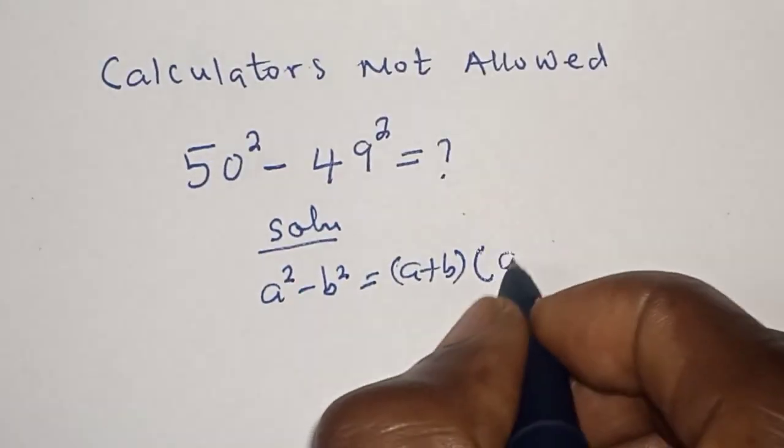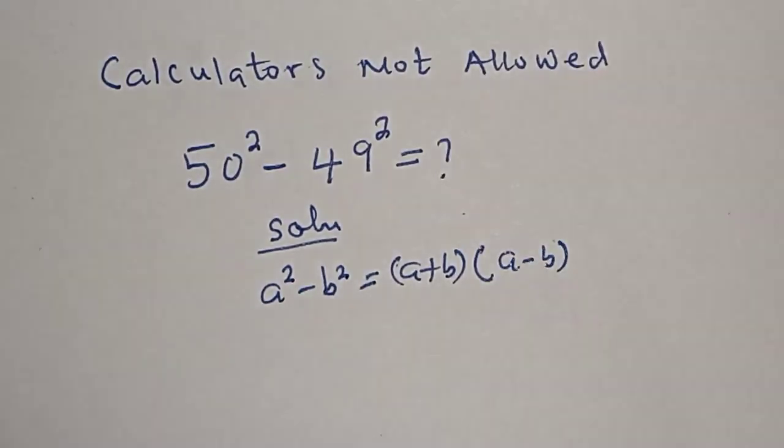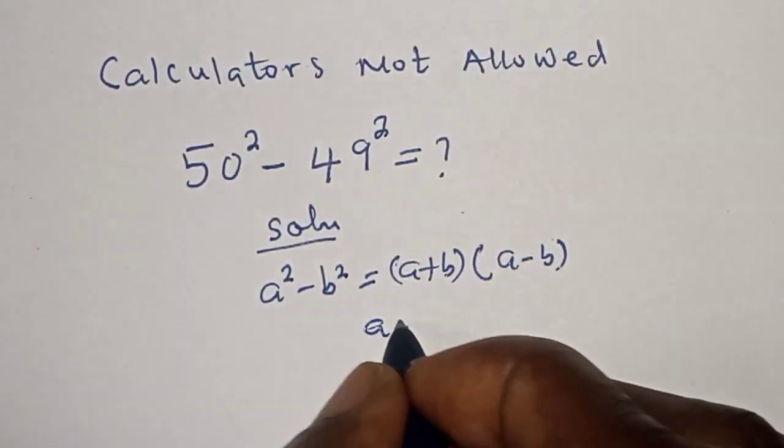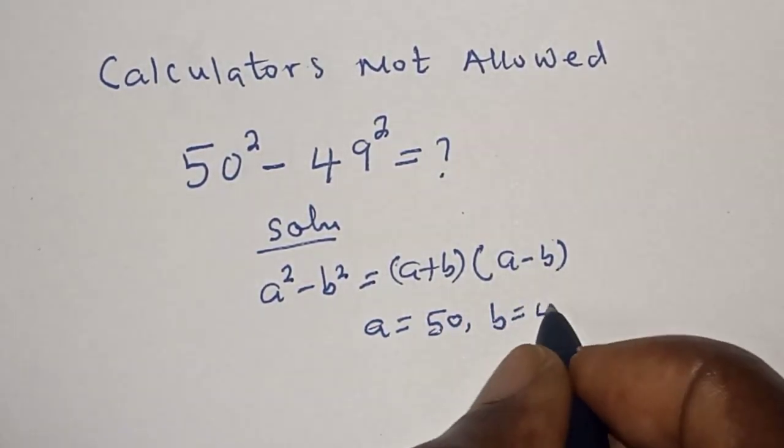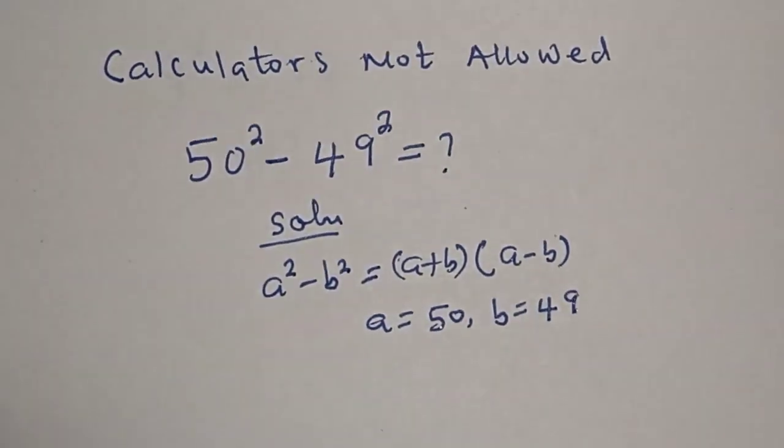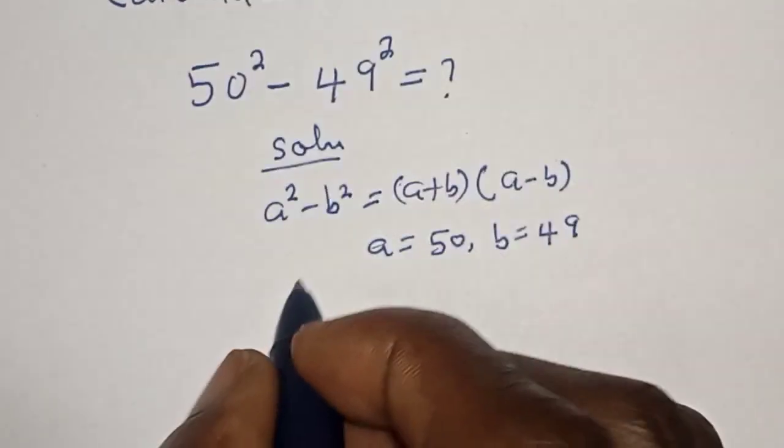Then a is equal to 50, b is equal to 49. So let's substitute. We have: